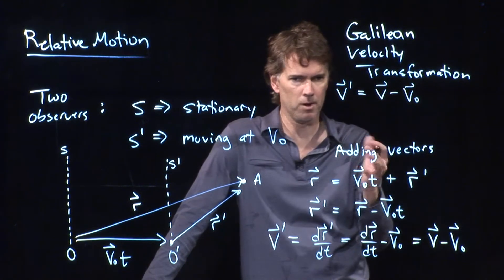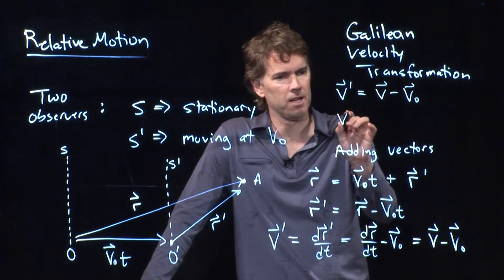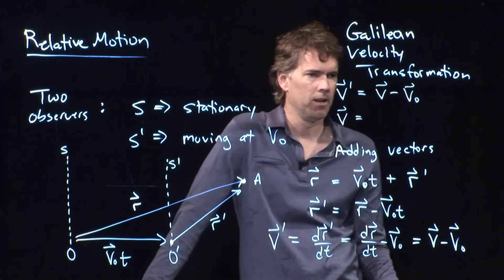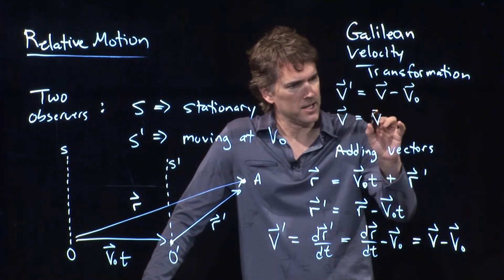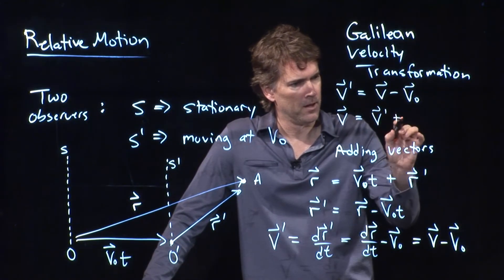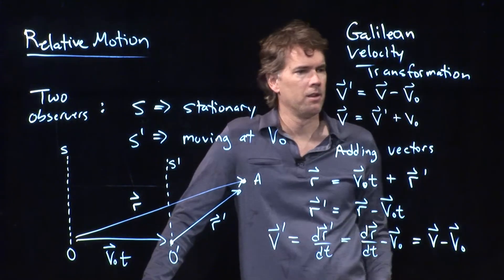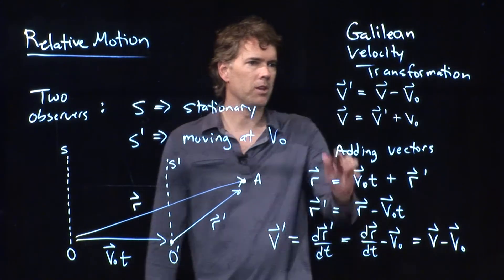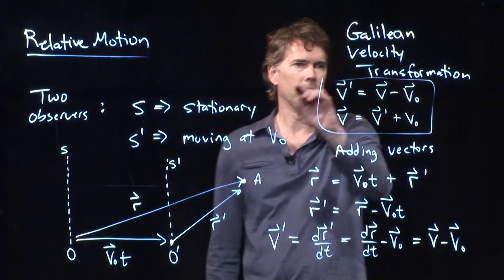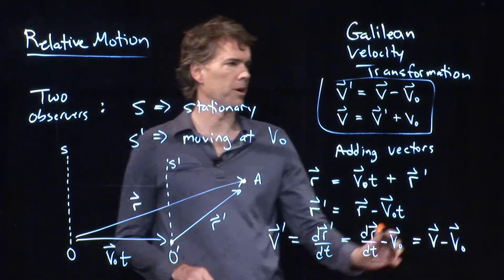You can, of course, rewrite this. The velocity in the stationary frame is going to be the velocity in the moving frame plus that. And so these are known as the Galilean velocity transformations.